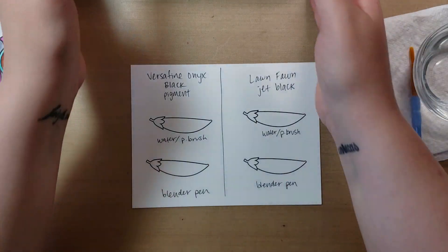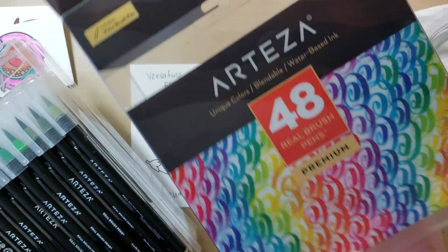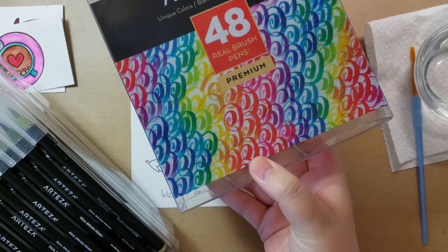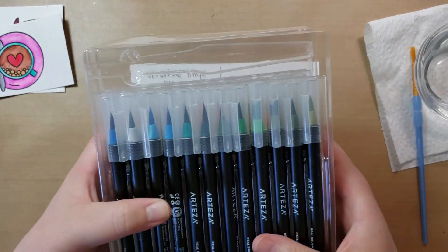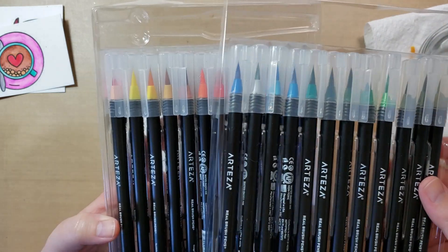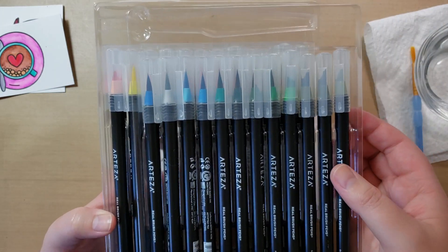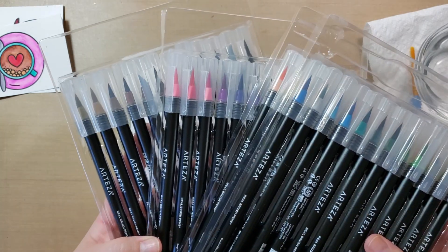And then I have the Arteza set, which came in this box, plastic box. I got them on Amazon. I liked that there were relatively good reviews on them, and people on Instagram I talked to who had them, and that there were 48 colors.